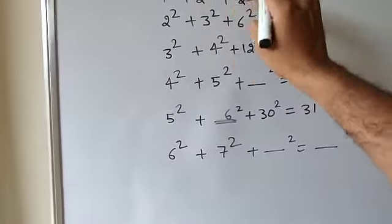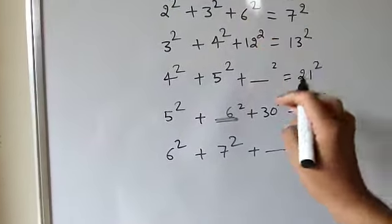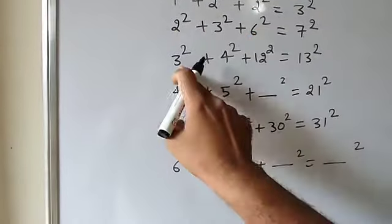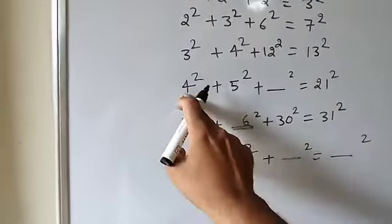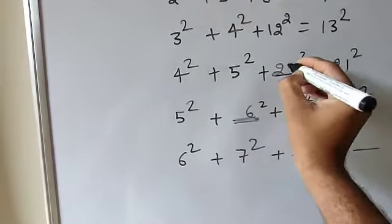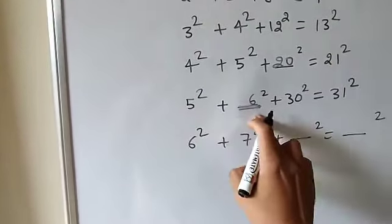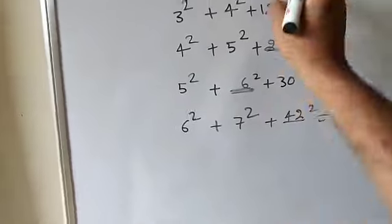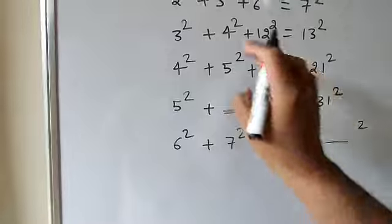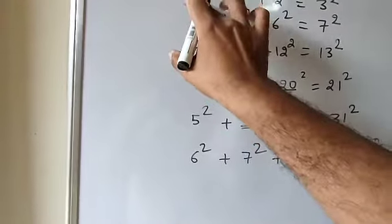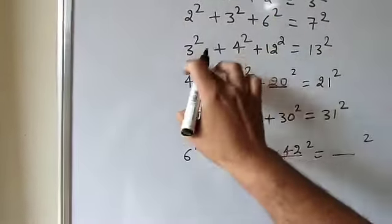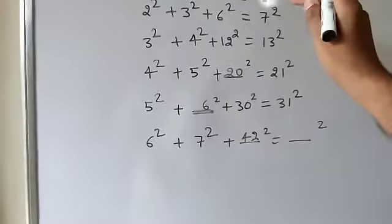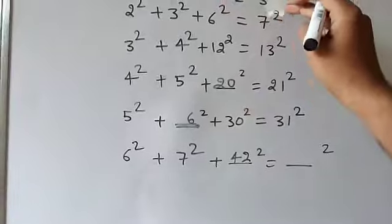Now how do you get the third column numbers 2, 6, 12? It follows: 1×2 = 2, 2×3 = 6, 3×4 = 12, then 4×5 = 20, 5×6 = 30, 6×7 = 42. So the missing number is the product of the two corresponding column numbers.